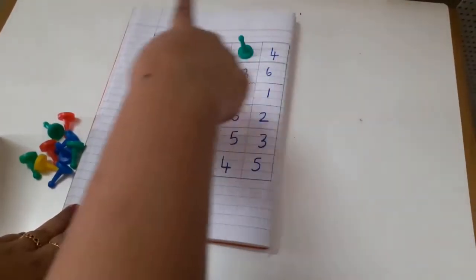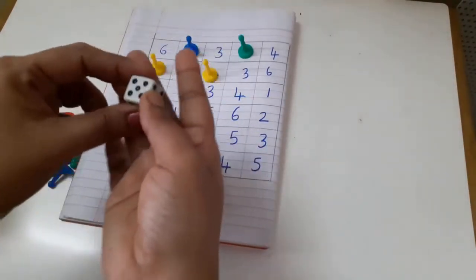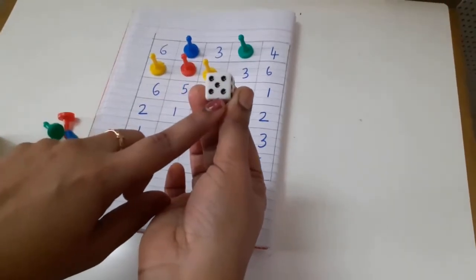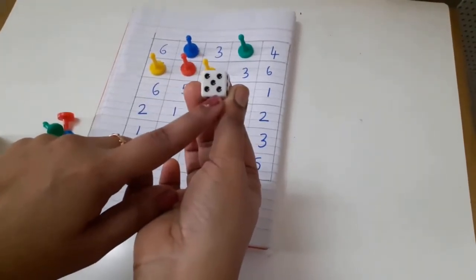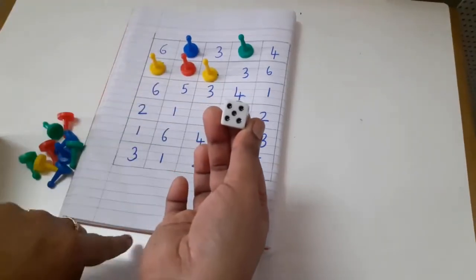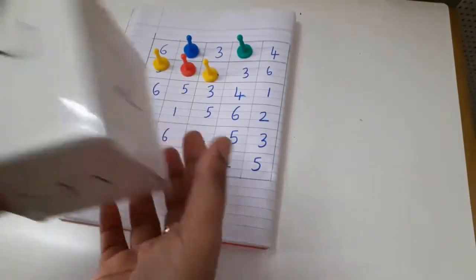Sometimes in these dices they have only dots and they don't give the direct numbers. So if your kid is finding it a little bit difficult to count and then place the coins, what you can do is use...